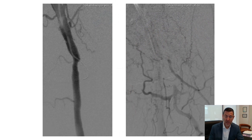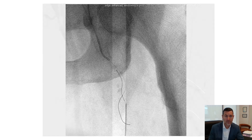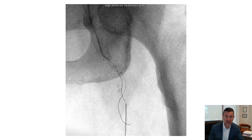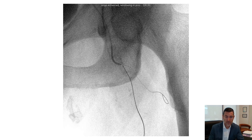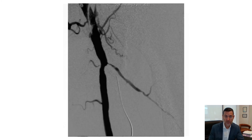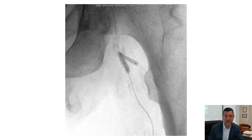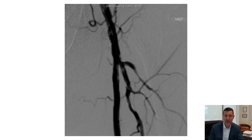This case shows a double profunda system. Using this retrograde technique, sequential ballooning of each profunda was performed. The first image shows rewiring of the more proximal branch, which was then ballooned, followed by kissing balloons at the origin of the double profunda to achieve an excellent angiographic result.